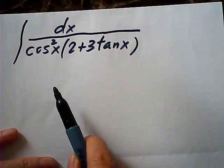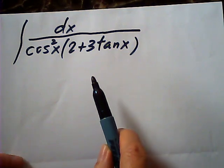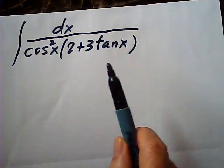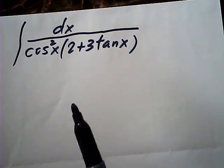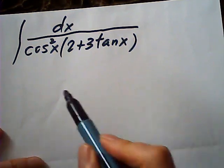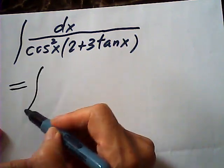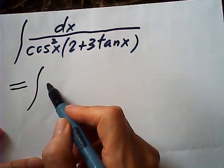This integral looks quite complicated, but actually when you see the key part, it could be done very easily, because the cosine squared could be written as a secant.